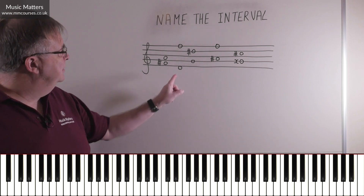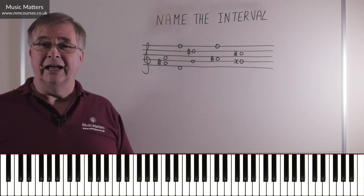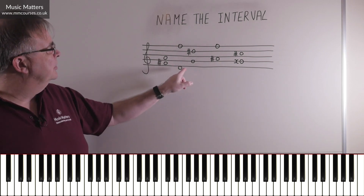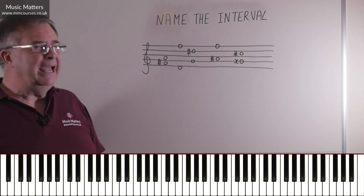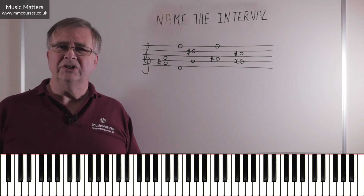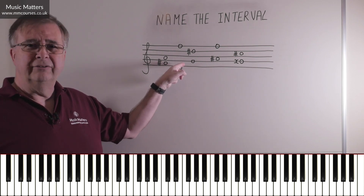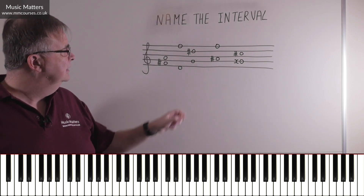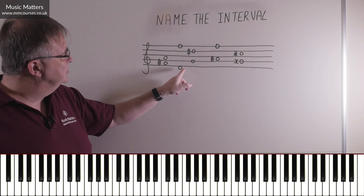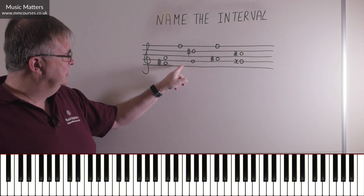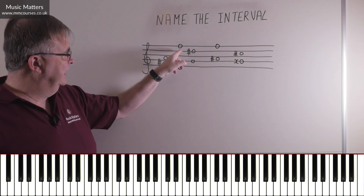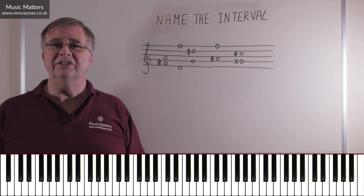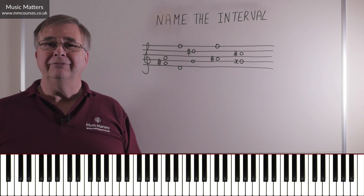Let's move on to the second interval. This one looks quite wide — we've got D at the bottom and F at the top. But this D is a long way from F, so we count: one, two, three, four, five, six, seven, eight, nine, ten. So you can call this a tenth.